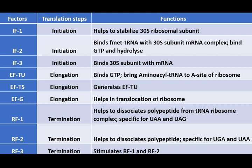The initiation factor 1 helps in stabilizing the 30S ribosomal subunit. Initiation factor 2 helps in binding the F-met tRNA with the 30S subunit mRNA complex and also helps in binding of GTP and hydrolase. The initiation factor 3 binds the 30S subunit with the active mRNA.